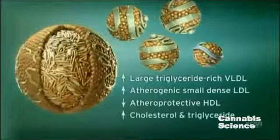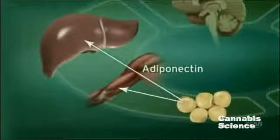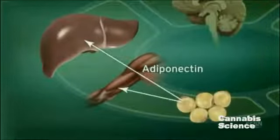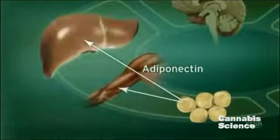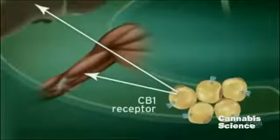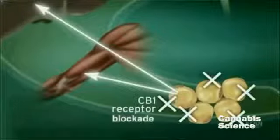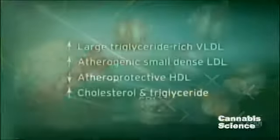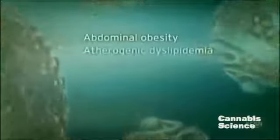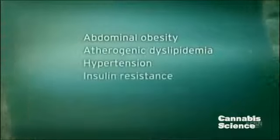Adiponectin, another hormone secreted by adipocytes, regulates lipid and glucose metabolism. Adiponectin is believed to regulate fatty acid oxidation in muscle and liver, thus improving insulin sensitivity. CB1 receptor stimulation in adipocytes reduces adiponectin, while CB1 blockade increases adiponectin synthesis.